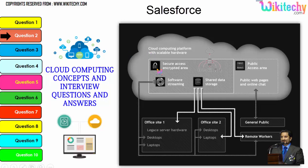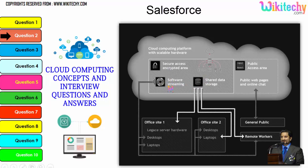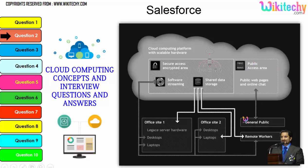You are able to see cloud computing will have the public access area — public web pages for end users — and apart from this there is secure data access, shared data storage, and software streaming. Companies can use it as a private kind of club, and the public can use it to access web pages or websites. This is how cloud computing is working.